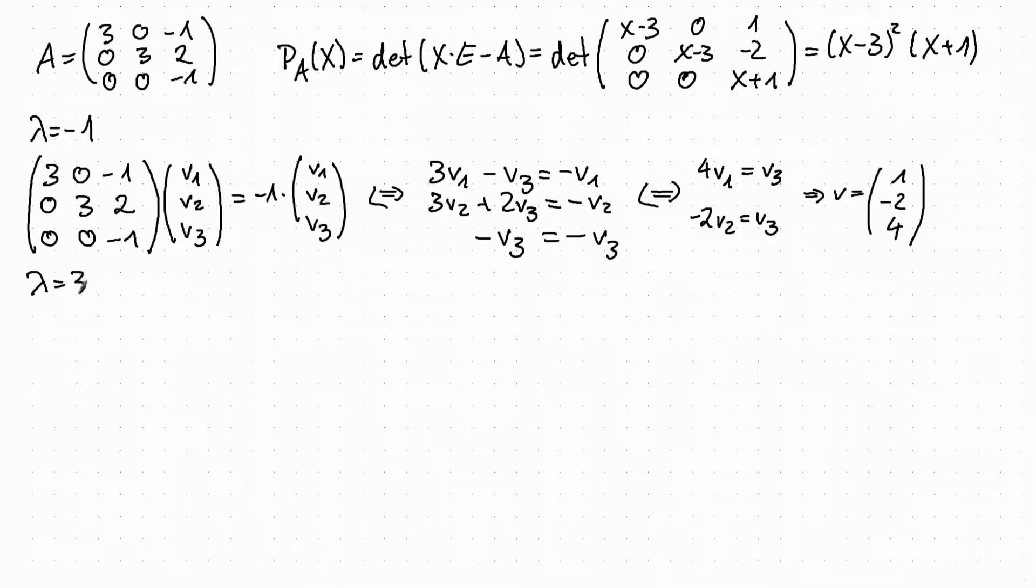Now we have to do the same thing for the other eigenvalue lambda equal to 3. So for lambda equal to 3, we have the following condition: 3, 0, minus 1, 0, 3, 2, 0, 0, minus 1, times our vector.